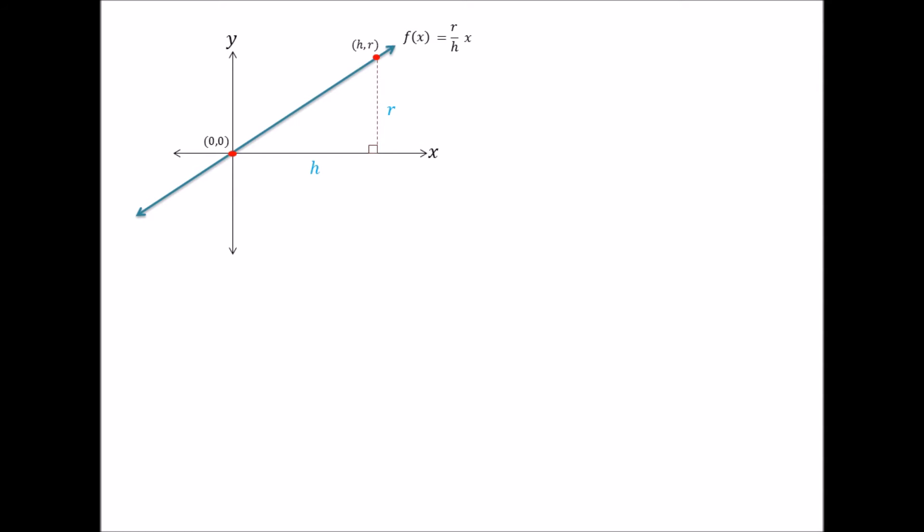And before I start with the disk method, as a quick side note, you know that if we take an instantaneous rectangular strip of length f(x) and width dx, having an instantaneous area dA, where dA = f(x)dx, and we integrate from the origin all the way to x = h, we will get the area under the curve f(x), or the area of the triangle.